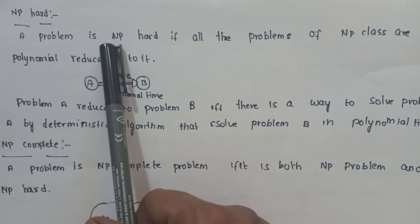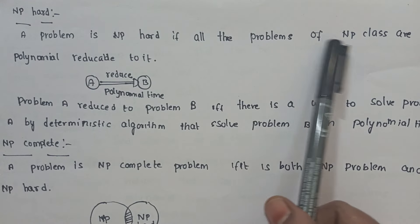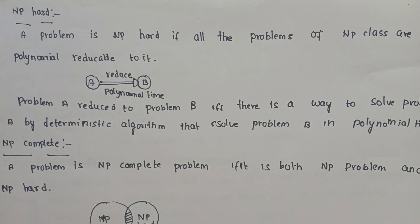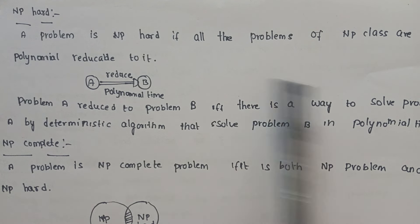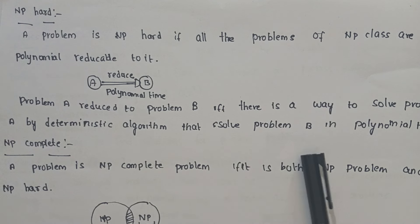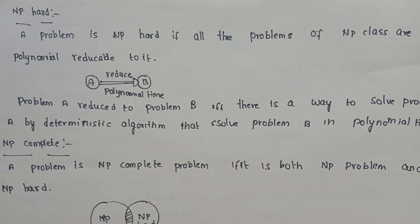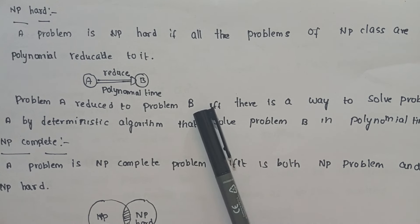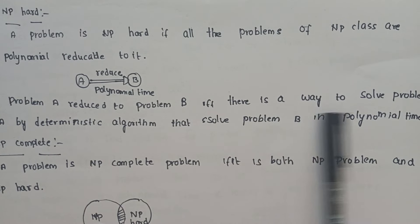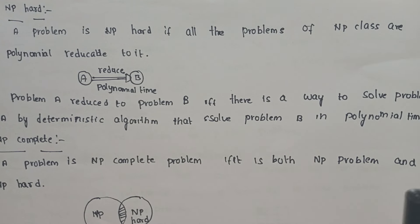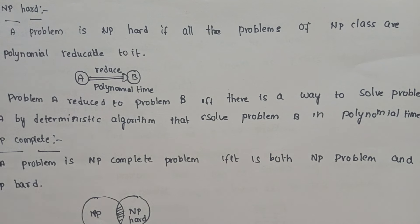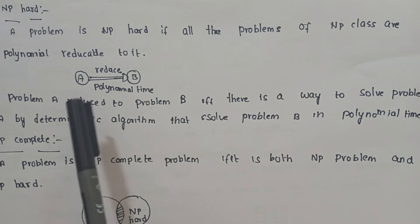The NP hard problem means: if every NP class problem is reducible to it in polynomial time, then it is an NP hard problem. If there is a way to solve problem A by using a solution to problem B in polynomial time, then problem A is polynomial-time reducible to problem B.